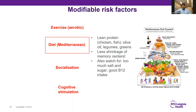In terms of diet, the Mediterranean diet has probably the most data in support of its role in preventing memory decline. The key aspects are lean sources of protein like chicken and fish, use of olive oil, lots of healthy vegetables, legumes, and greens. It's been associated with less shrinkage of the memory centers. In addition, it's important to watch salt and sugar intake, and for those on stricter diets like vegan, make sure there are good sources of vitamin B12.